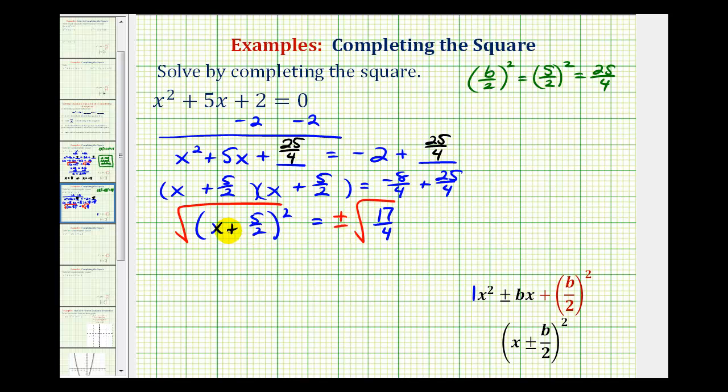On the left, we have x + 5/2. On the right, we have ±√17/√4, which equals ±√17/2.